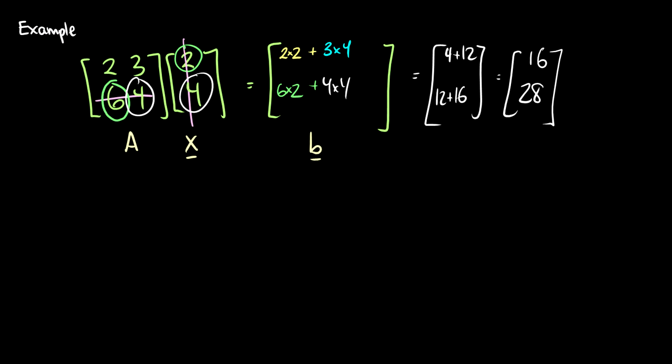Our result is the 2 by 1 vector [16, 28]. That is how we compute A times x. Notice the way I told you before works exactly the same. If we take these a1 and a2, we label this x1 and x2, then we get x1*a1 plus x2*a2.